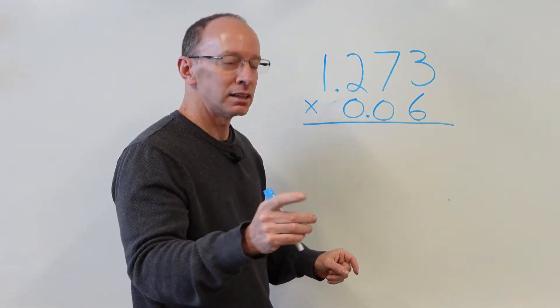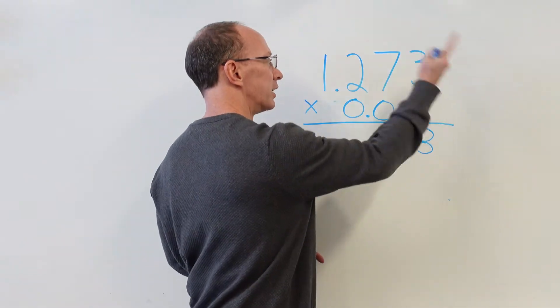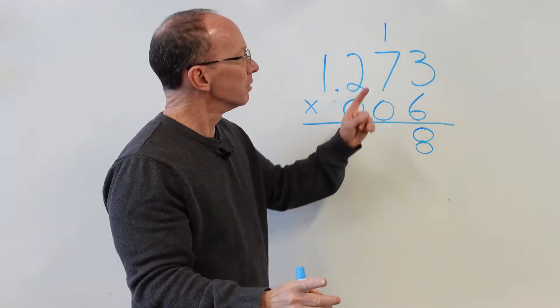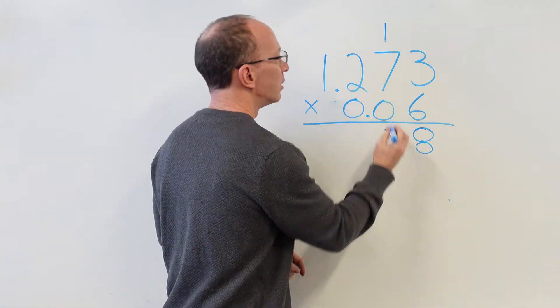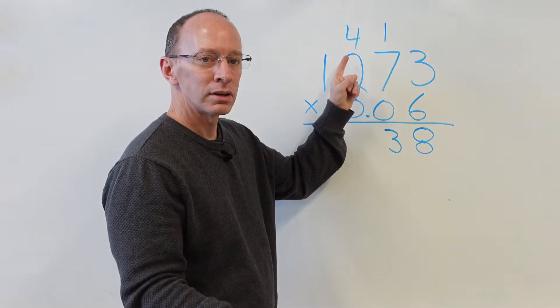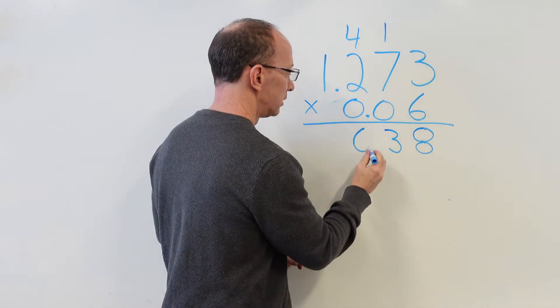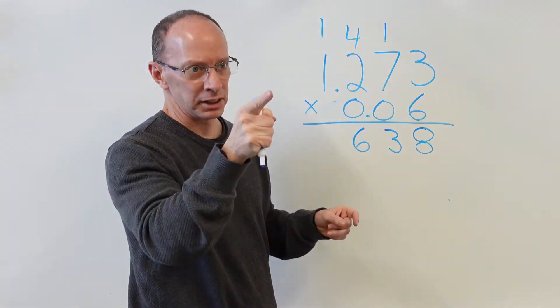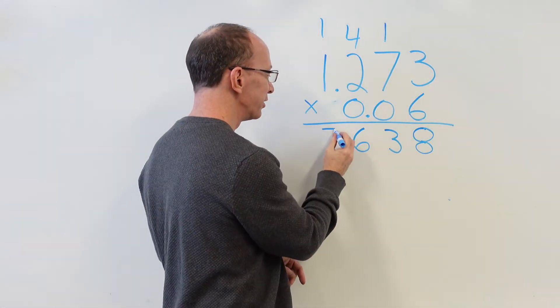6 times 3, 18. Put the 8 here, carry that one over here on top. 6 times 7, 42. 42 plus 1, 43. Put the 3 here, 4 up here. 6 times 2, 12, plus that 4. 12, 13, 14, 15, 16. Put the 6 here, put the 1 up here. 6 times 1, 6, plus the other one, 7. You guys are doing a good job.